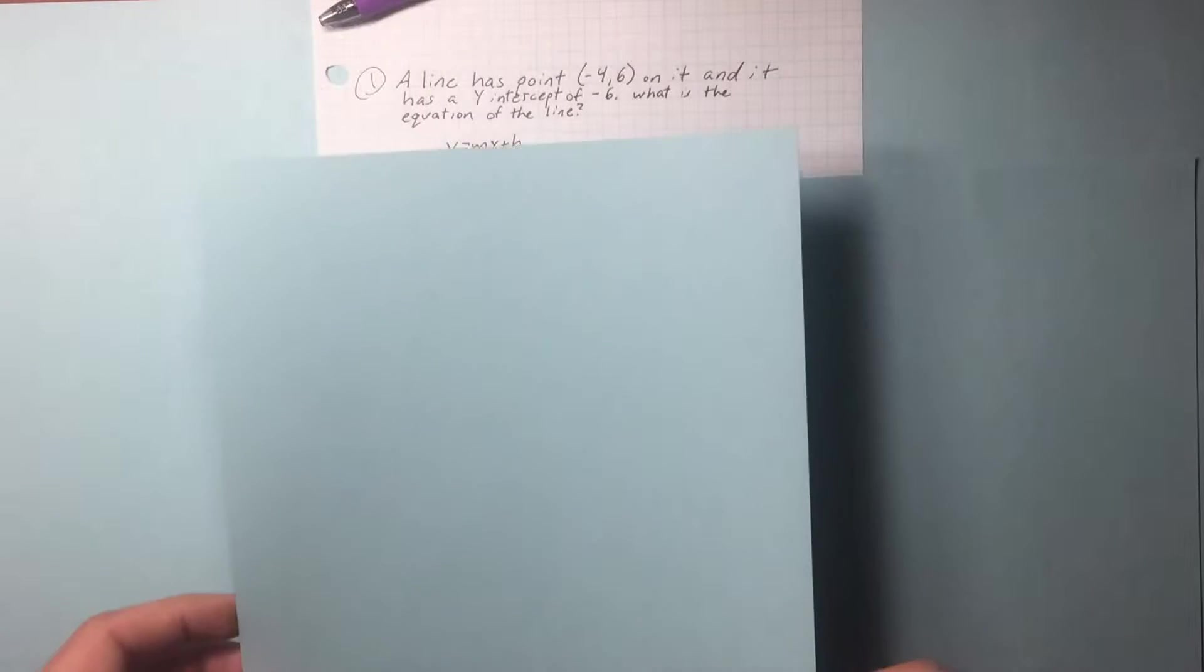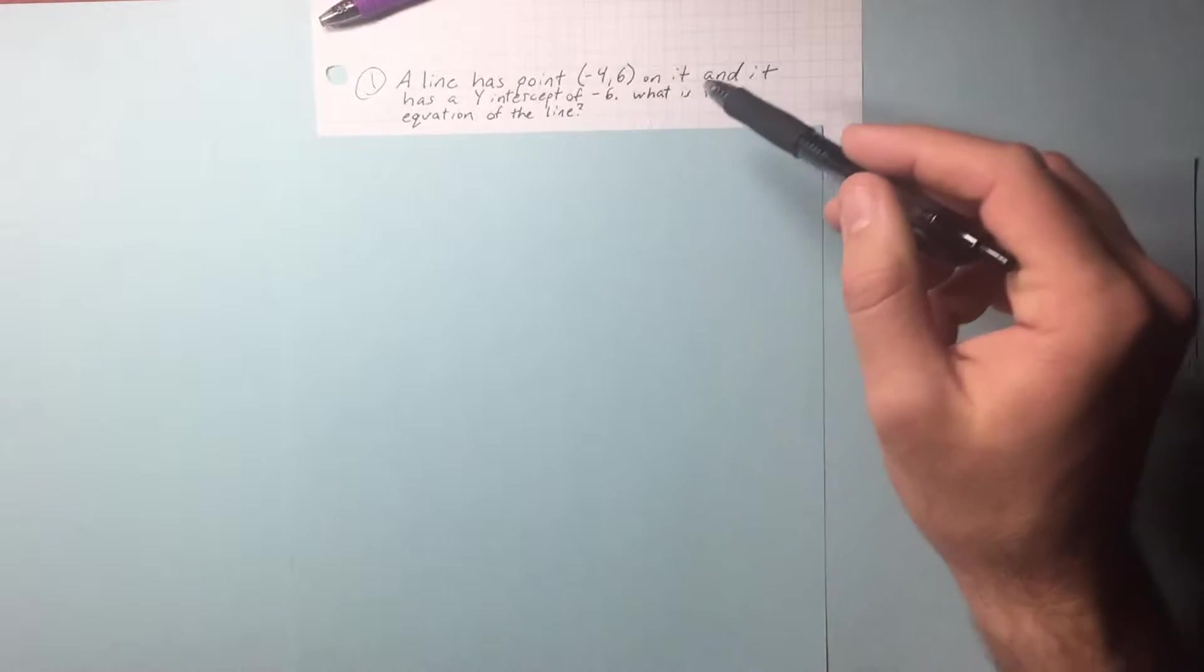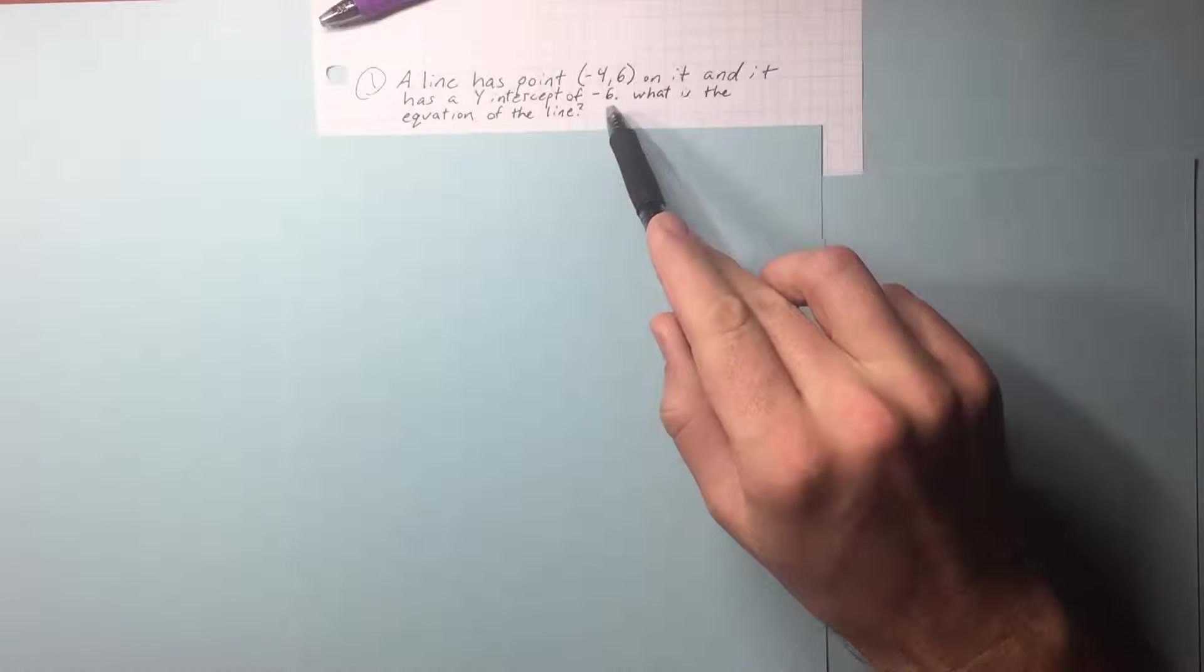Let's look at how we use y equals mx plus b to do a problem. The line has a point of negative 4, 6 on it, and it has a y-intercept of negative 6.